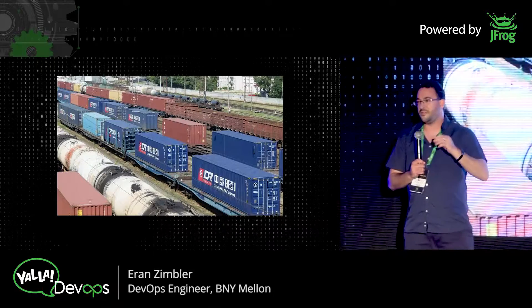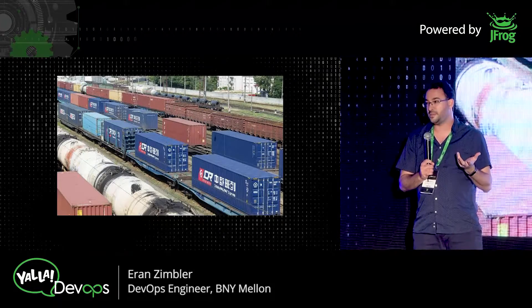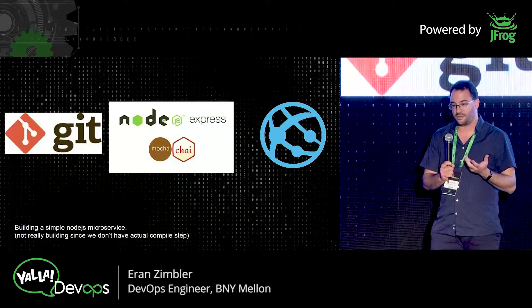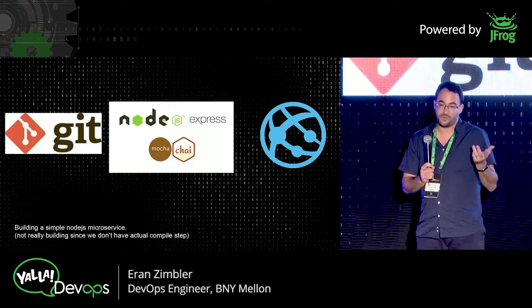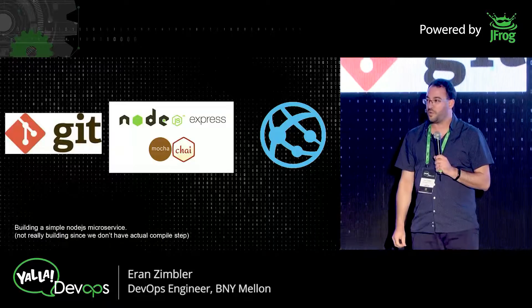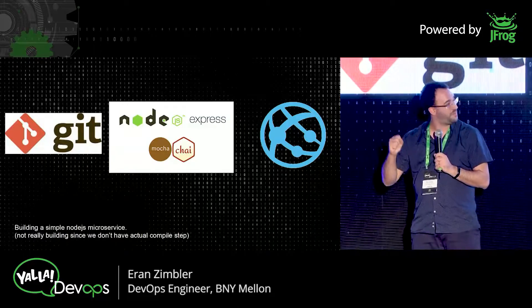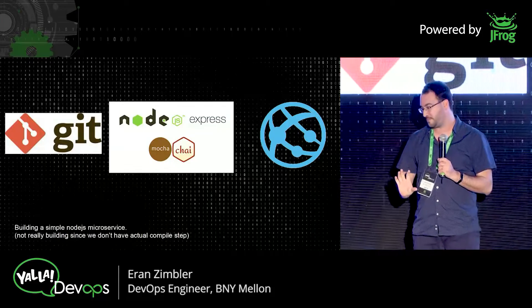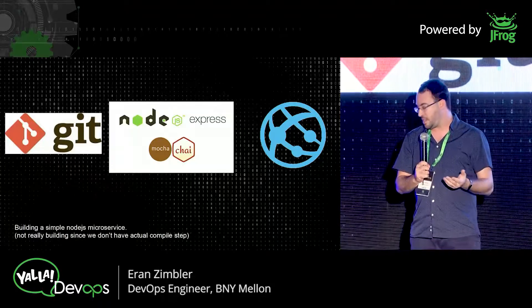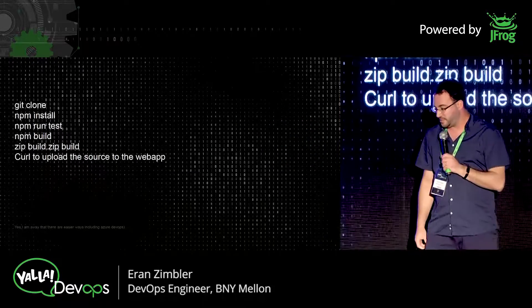Let's take a very simple example. Let's say we have a service — a service made out of Node.js that is using tests with Mocha, and eventually gets deployed to Azure. Node doesn't have a real compile stage, but it will still be fine. We all know the commands, and we can separate each one of them into its own container, and it will be great.